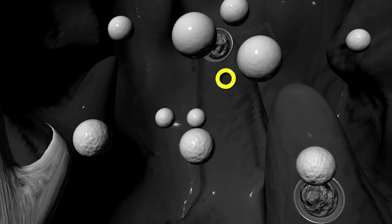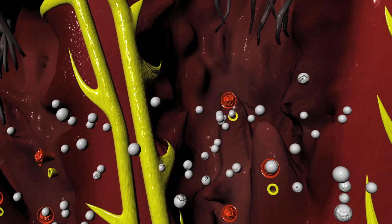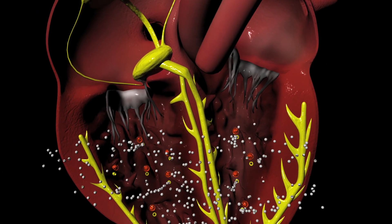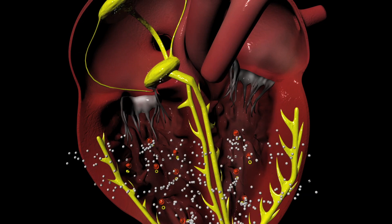This is calcium. These are calcium channels. Now that the calcium channels are open, calcium can enter into the tissue of the heart.